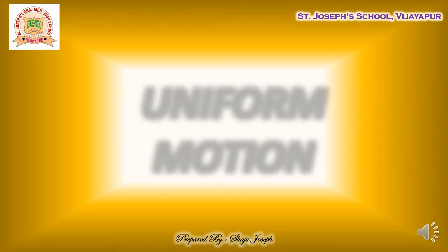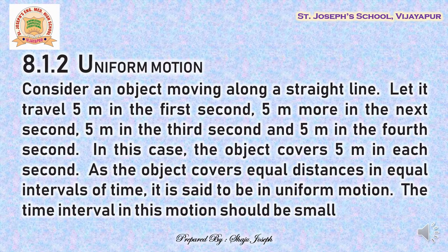So what is uniform motion? Consider an object which is moving in a straight line. If it is covering 5 meters in its first second of movement, and again covering 5 meters in the second second of movement, and similarly the third second it covers again 5 meters, then we find that it is covering equal distances in the same interval of time.